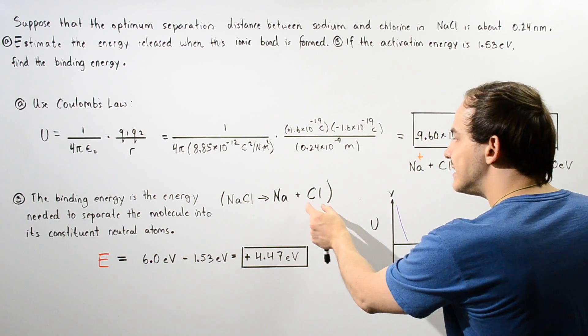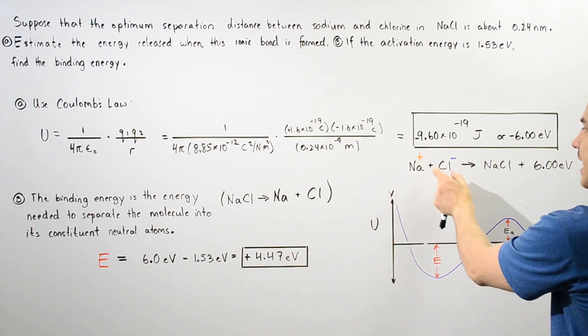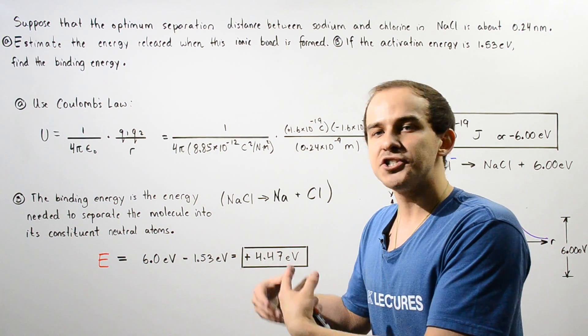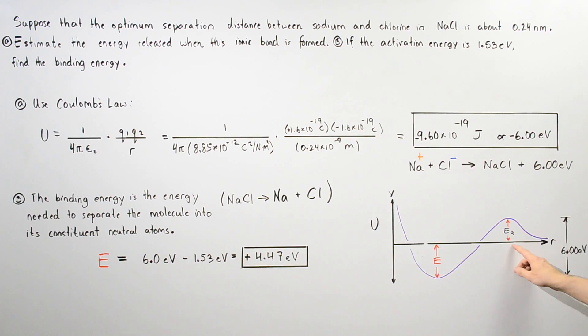To go from Na and Cl to Na+ and Cl-, a certain amount of energy must be inputted. This energy is equal to the activation energy given by Ea, which equals 1.53 electron volts. At this particular location, this corresponds to Na having a plus and Cl having a minus.